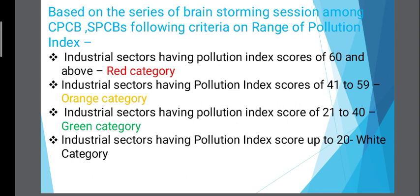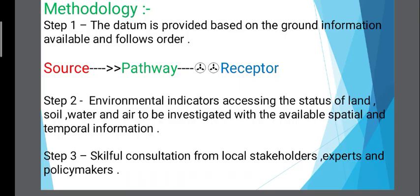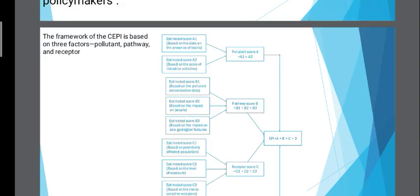According to CEPI, different industrial sectors are categorized into red, orange, green, and white categories. White category has a pollution index score up to 20; green category scores 21 to 40; orange category scores 41 to 59; and red category scores 60 and above. There is a diagrammatic representation of these different categories.